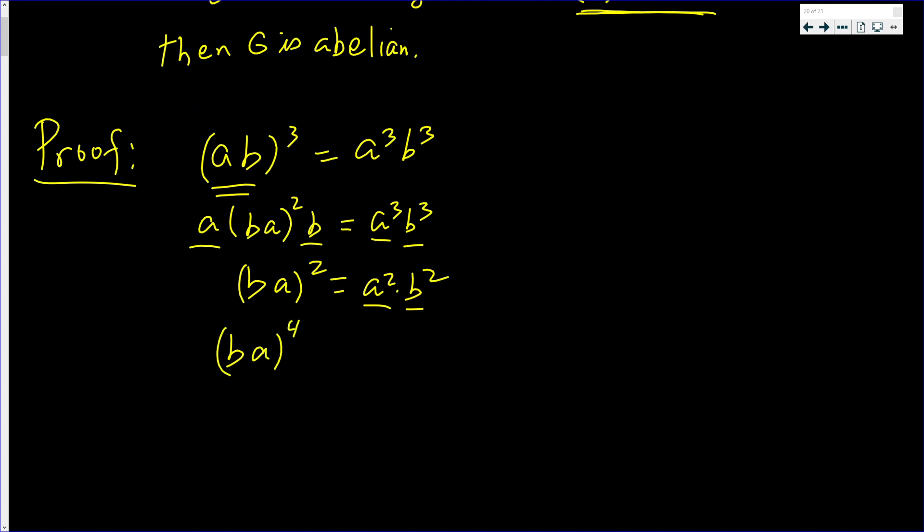When you square the left side, you get (ba)⁴. When you square the right-hand side, you get this squared times that squared. We learned that right from the line above.